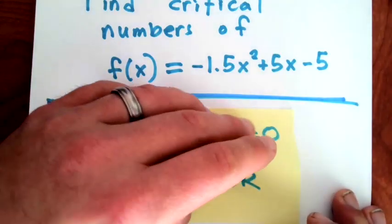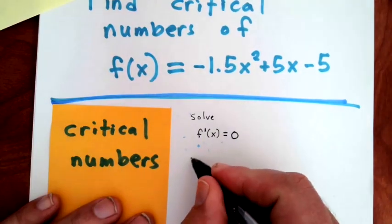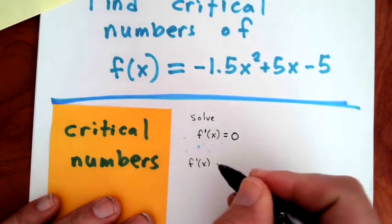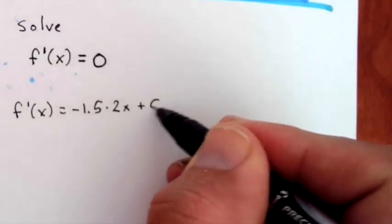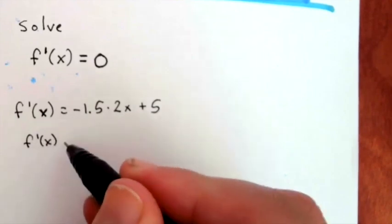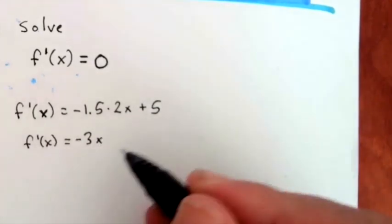So to solve f'(x) = 0, I need to find f' first. f'(x) will be -1.5 times 2x plus 5, so f'(x) is -3x + 5.